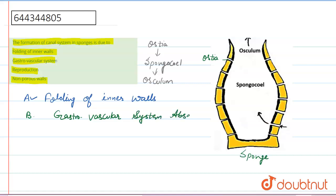So the second one is also wrong. Now see the third one. The third one is reproduction. In this we can say that asexual reproduction or bud is formed, so it is not connected to any type of canal system, so it's also wrong.